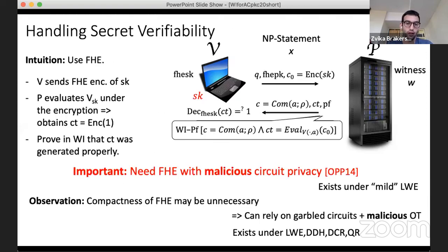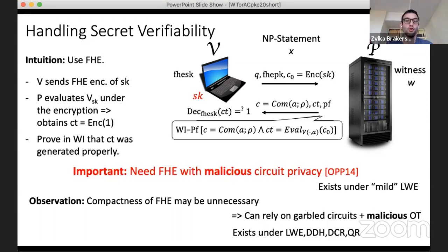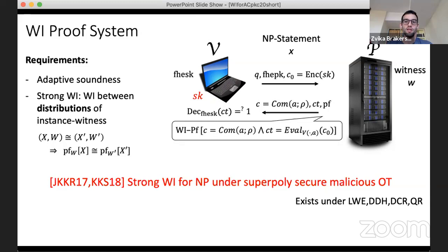To handle the verifier's secret key, we use fully homomorphic encryption: the verifier sends an encryption of the secret key, and the prover works under the FHE. The FHE must be maliciously circuit-private, but compactness is not required — solutions based on maliciously secure oblivious transfer and garbled circuits also work. For the WI proof system, we need strong witness indistinguishability: WI even when each instance has only one valid witness, so long as the distribution of instances is computationally indistinguishable.